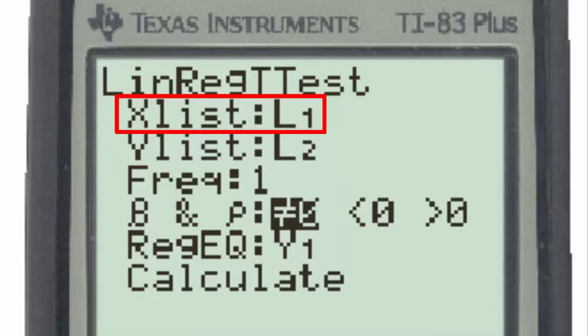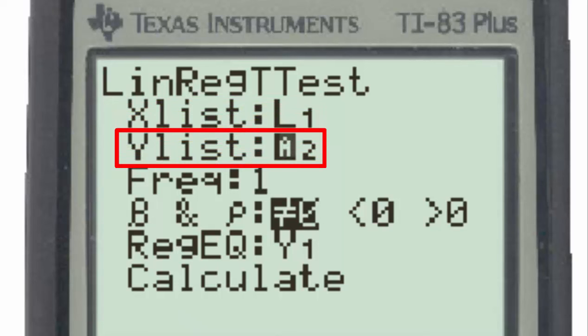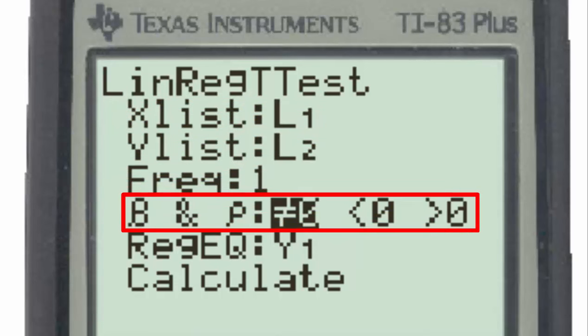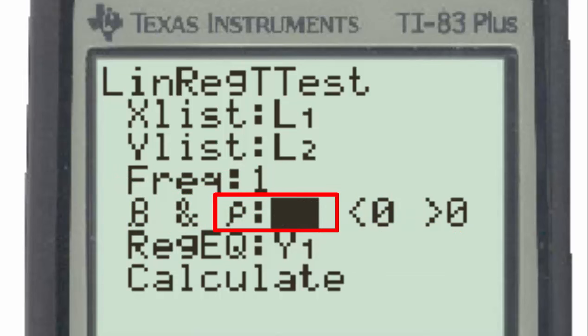The input for the x-list should be List1 and for the y-list should be List2. The frequency is set at 1, and for the inequality found in the alternative hypothesis, select not equal to 0, which corresponds to the rho not equal to 0.